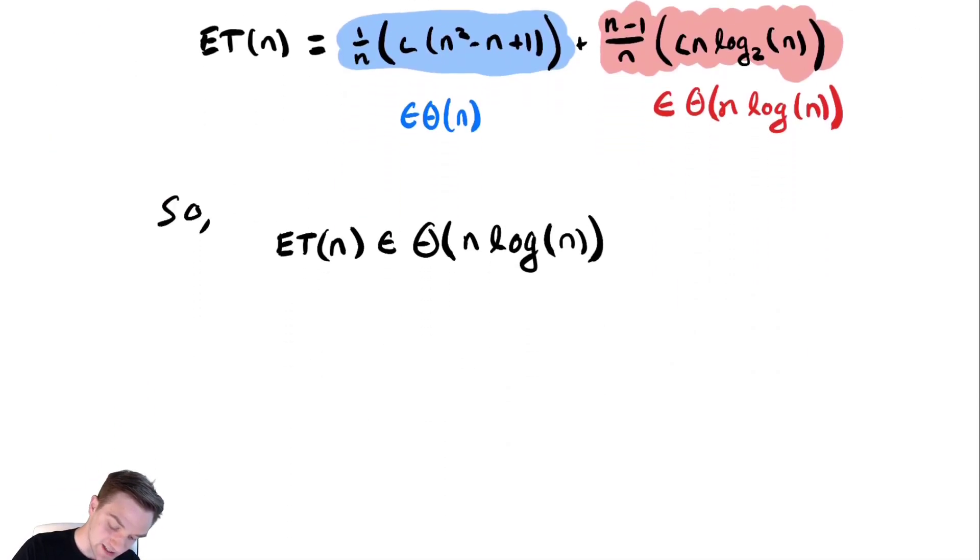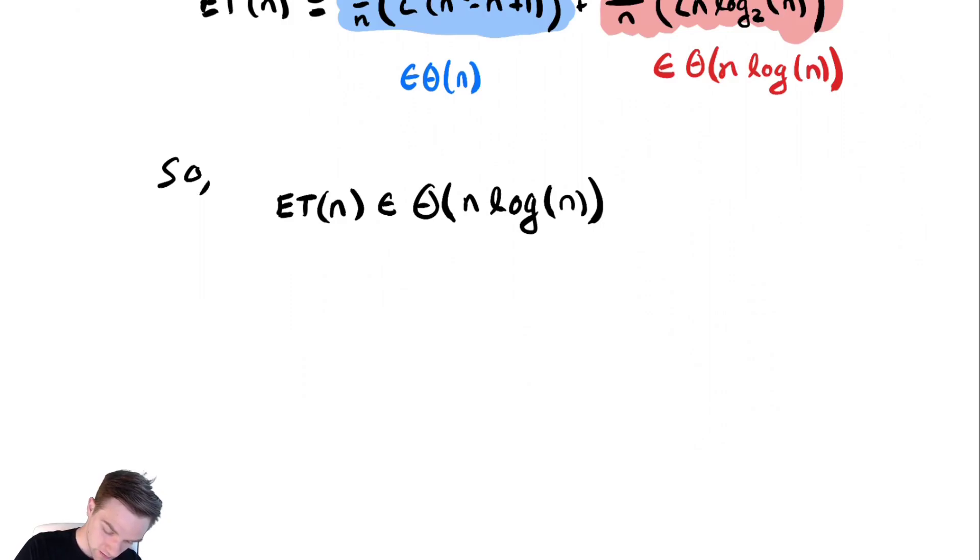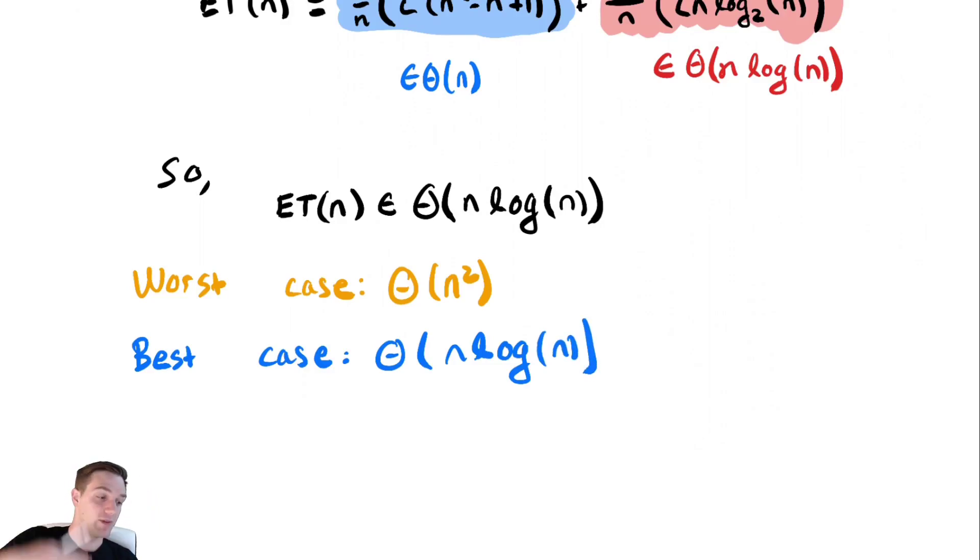And the best case would be theta of n log of n. And now we fully categorize this. This is an interesting example compared to our last two, because now our expected time is the same as our best case running time.